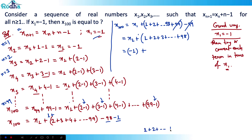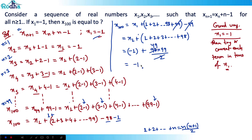Now x1 = −1, and the sum from 1 to 98 uses the formula n(n+1)/2. So sum = 98 × 99 / 2 = 49 × 99 = 4851. Therefore x100 = −1 + 4851 = 4850.